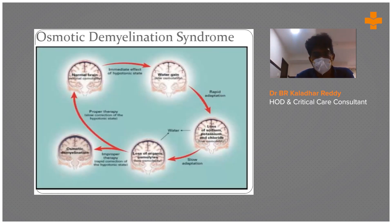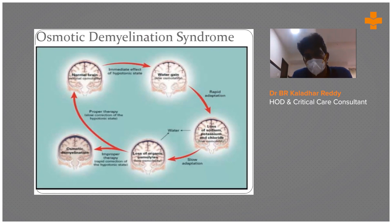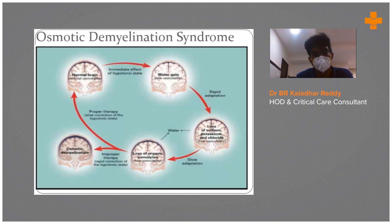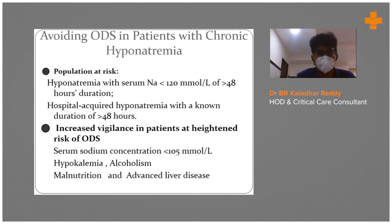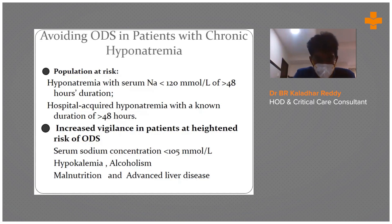Osmotic demyelination syndrome occurs due to water gain and rapid adaptation, leading to loss of sodium, potassium, and chloride. In slow adaptation, osmotic granules are formed. Rapid correction of hypotonic solution worsens the situation — causing more water retention — which actually triggers osmotic demyelination syndrome.